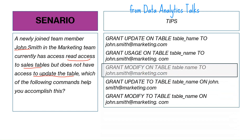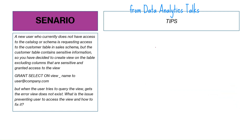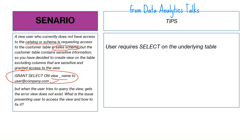Scenario five: a new user without access to the catalog or schema requests access to the customer table in the sales schema. Since the table contains sensitive information, you create a view excluding sensitive columns and grant SELECT on that view. However, when the user queries the view, they get an error: 'view does not exist.' The issue is that the user also needs access to the schema.